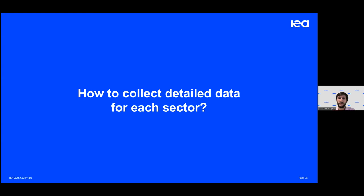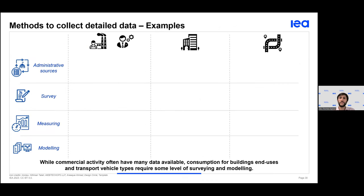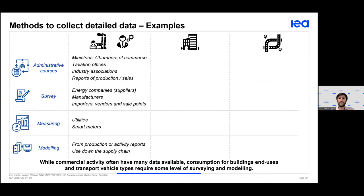Now let's look at how to collect data, because this is no simple task. We have four data collection methods: administrative sources, surveys, measuring, and modeling to complement these. For commercial activities — industry and services — a great basis of information can be found through economic authorities such as Chambers of Commerce, regulation authorities, or tax reports, complemented with energy companies' data and sales reports. These sectors are often already collecting significant data themselves, so the main trick is to gather it and ensure methodological consistency.